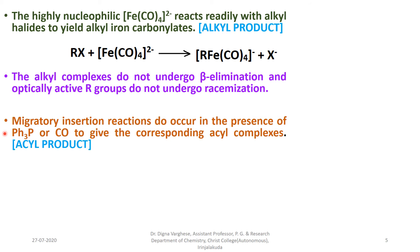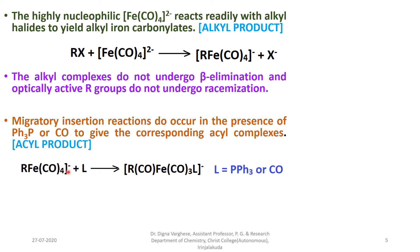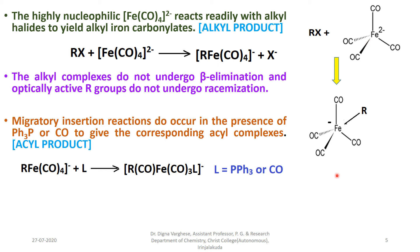Migratory insertion reactions do occur in the presence of triphenylphosphine or CO, giving the corresponding acyl complexes. When an alkyl halide reacts with Collman's reagent, this alkyl product then reacts with another ligand such as CO to give an acyl product. In the alkyl product, the R group is attached to the iron center.